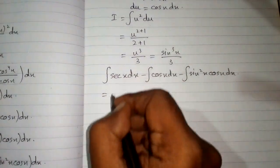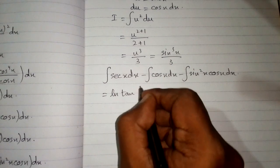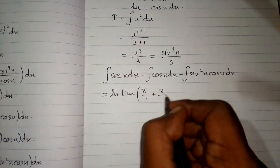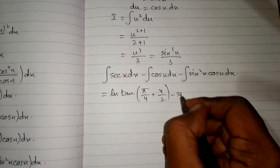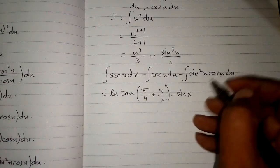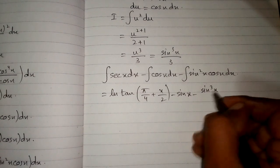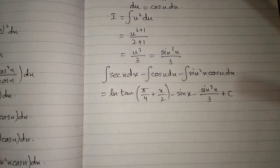The integral of sec x is ln of tangent of pi by 4 plus x upon 2. The integral of cos x is sin x. Therefore, the final answer is: ln|tan(π/4 + x/2)| minus sin x minus sin cube x upon 3 plus C, where C is the constant of integration.